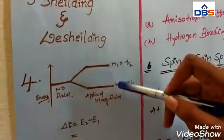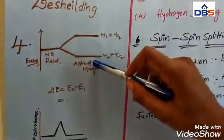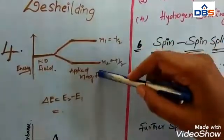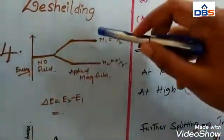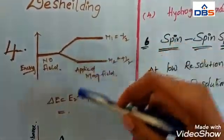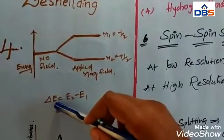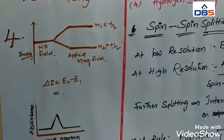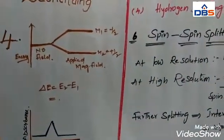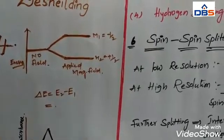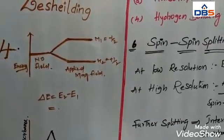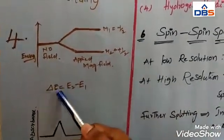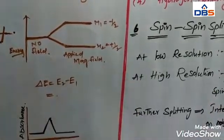That two energy levels are mentioned here. One is upper and one is lower. It is nothing but one is ground state and another one is excited state, or one is lower state and one is higher state. The difference between these two energy levels is always indicated here: delta E is equal to E2 minus E1. When an electron is moving from one level to the other, it provides the energy gap. That energy gap is also indicated here: delta E is equal to E2 minus E1.